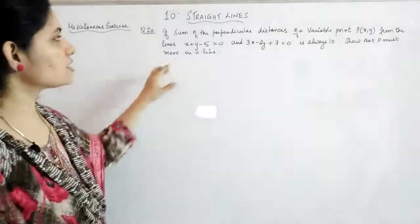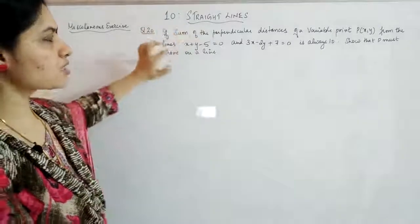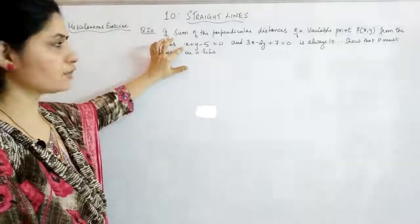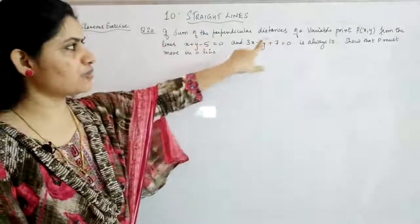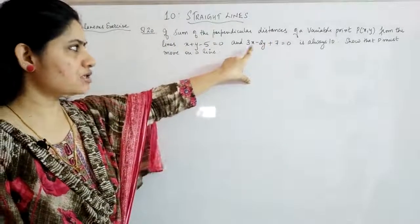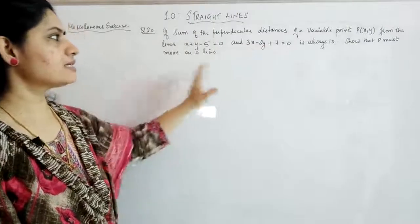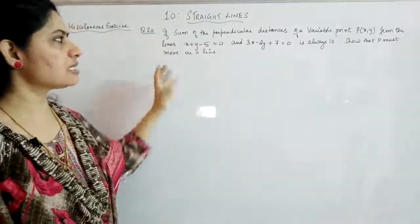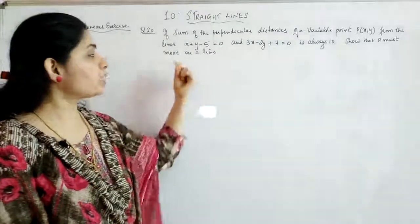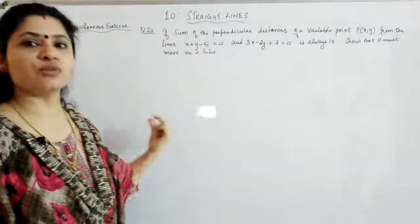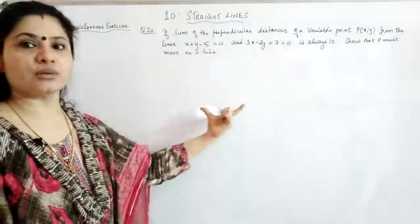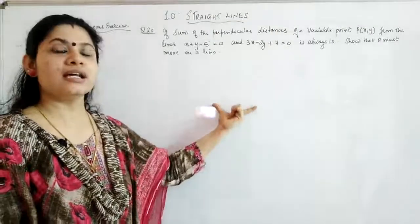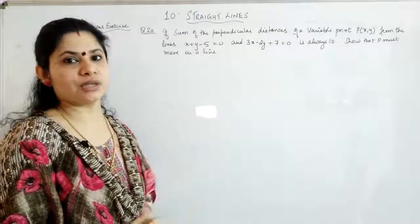You have been given a condition: from the point (x, y) to this line, find the perpendicular distance. Again, from the same point P(x, y), the perpendicular distance to the second line — their sum should equal 10. You have to show that under this condition, the point P must move on a line, meaning you have to get the equation in the form ax + by + c = 0.